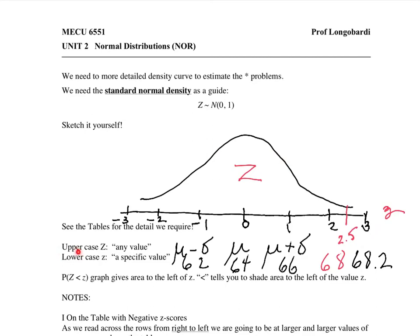And so uppercase Z for any value, lowercase z for a special value over here. So when I write the p proportion that, under the curve big Z, that are less than little z, you can think of this as little z here. And we say the proportion of observations or the probability that an observation is less than little z is whatever it is that we're looking for.